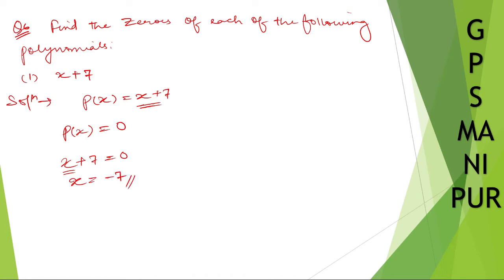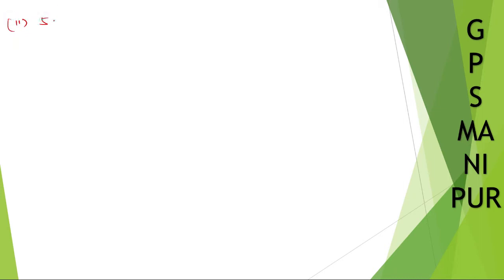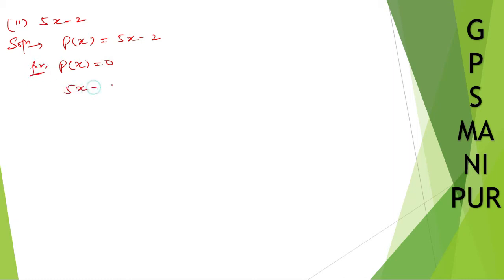The zero of this polynomial is -7. Now roman number two: p(x) = 5x - 2. Setting p(x) = 0, we get 5x - 2 = 0, so 5x = 2, and x = 2/5.